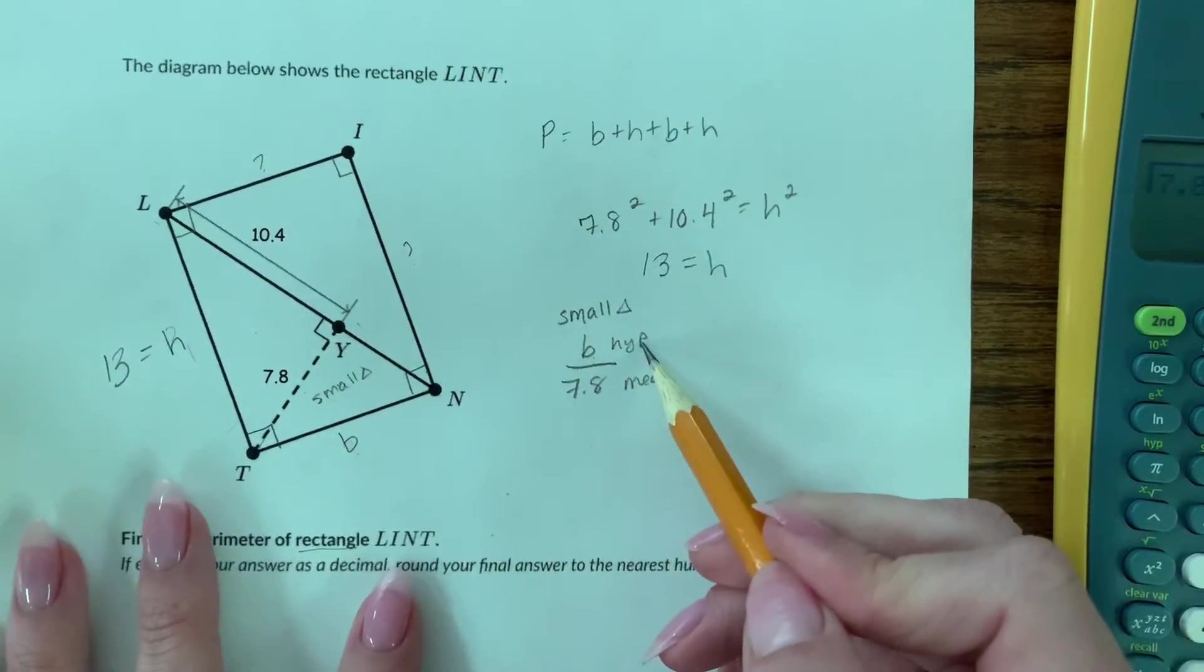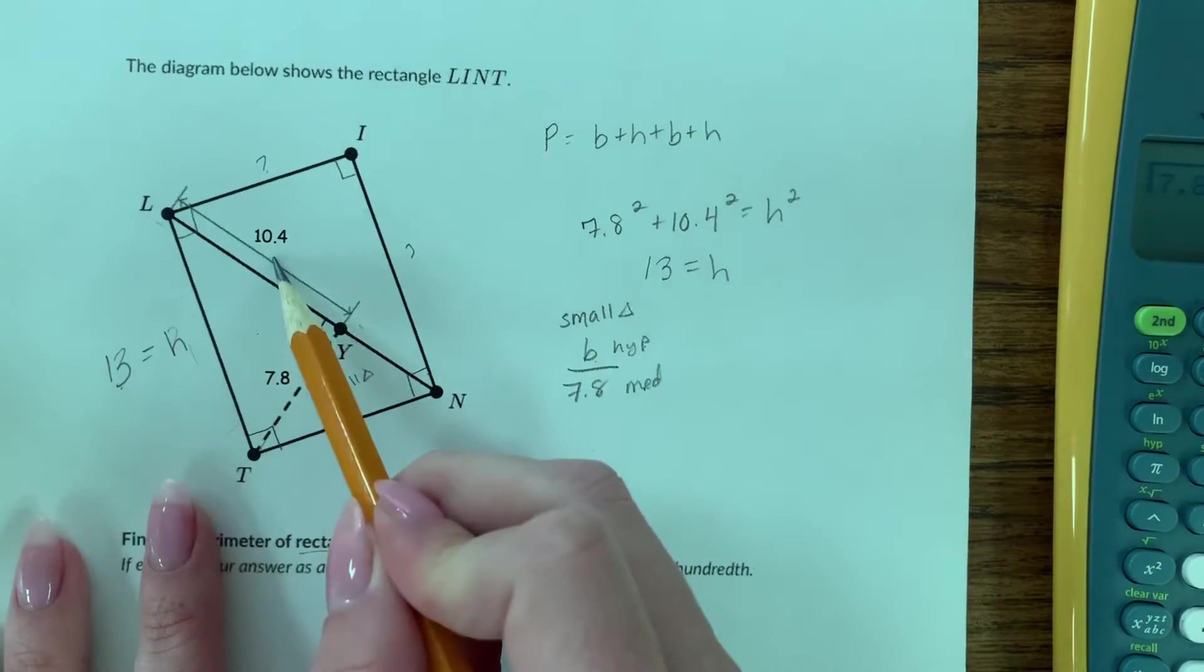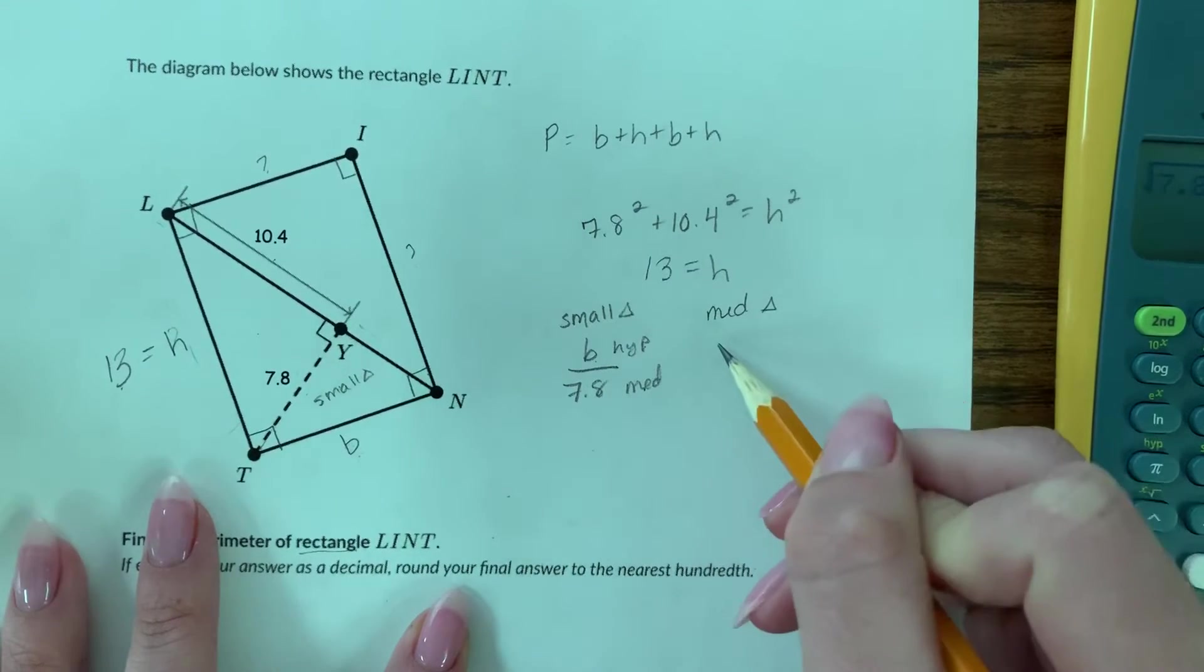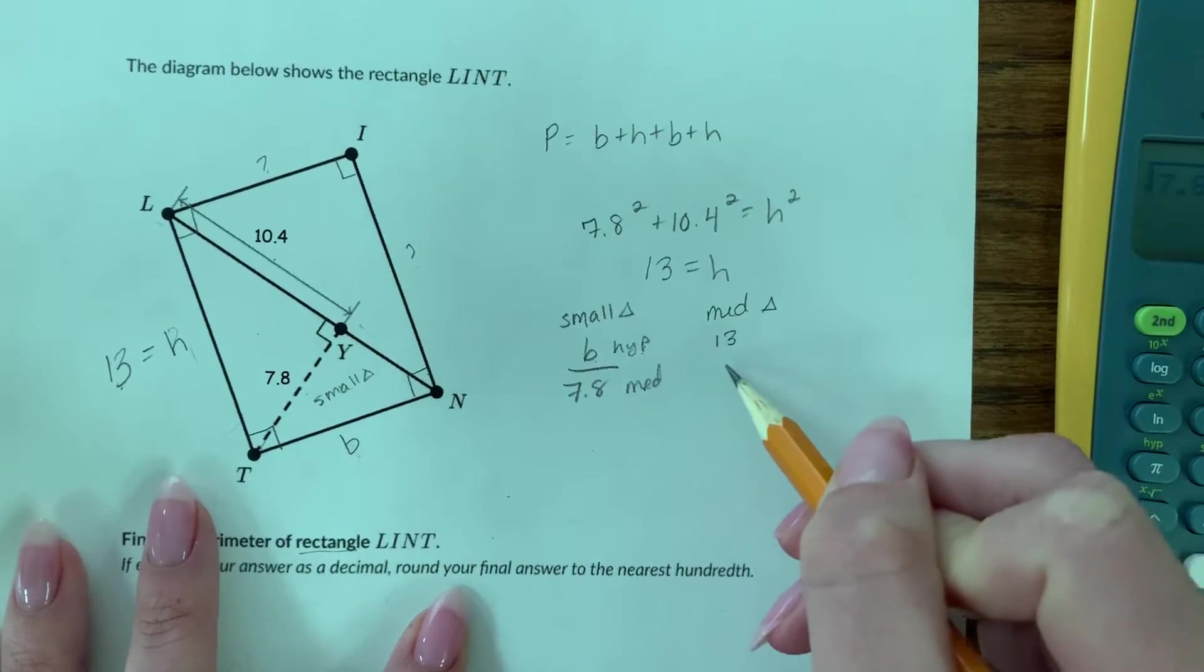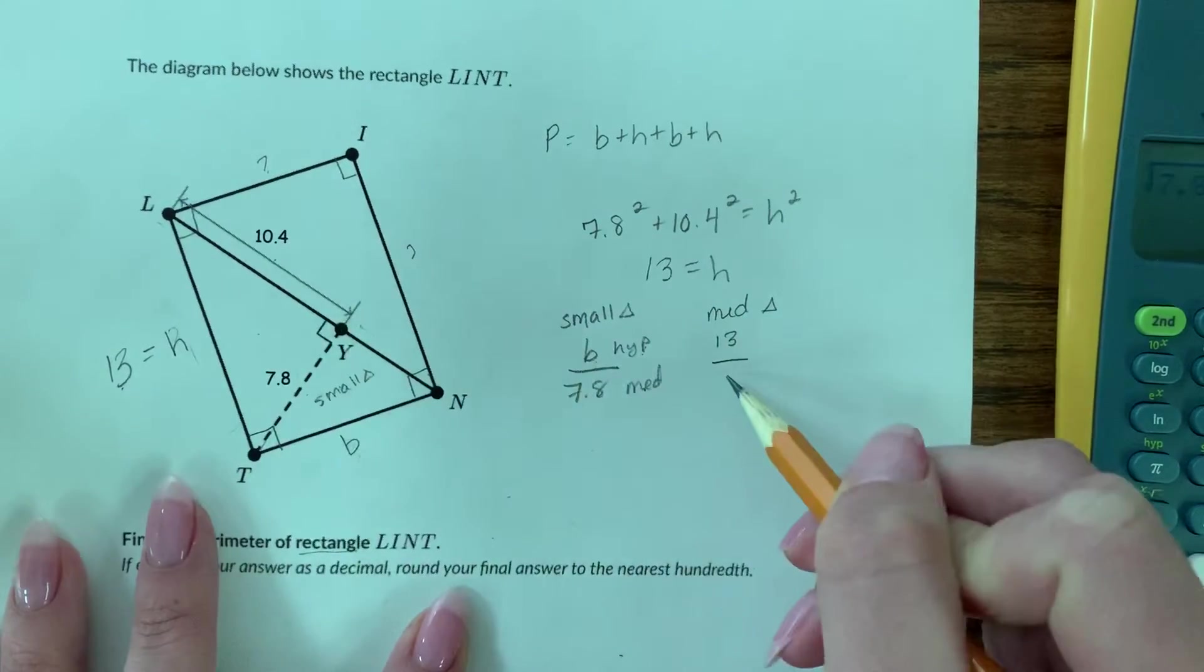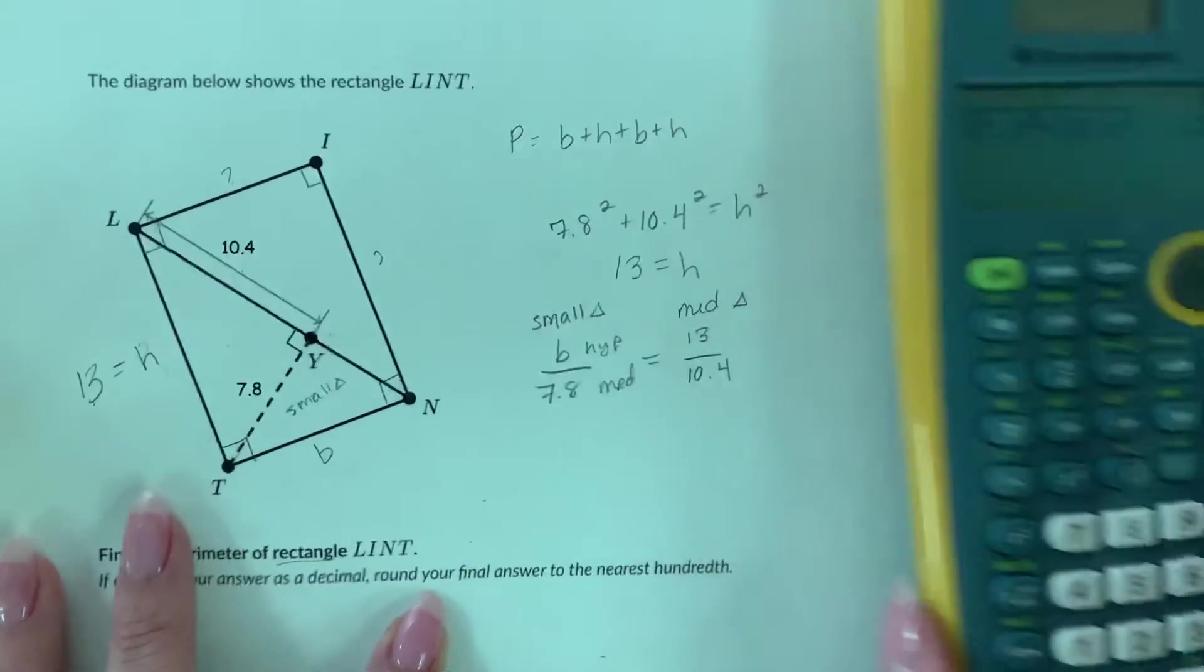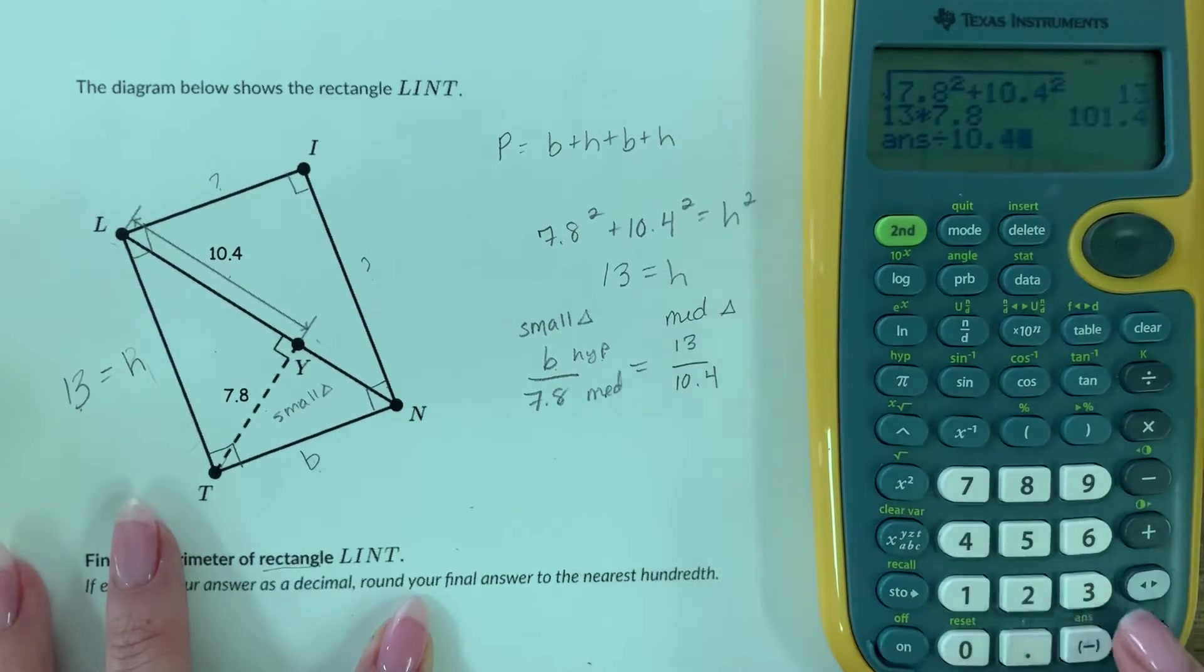I actually know the hypotenuse and the medium side of this medium triangle right here. For this medium triangle, the hypotenuse is 13 because I just figured that out, and the medium side is 10.4. If I do cross multiplication, I'll do 13 times 7.8 and then divide that by 10.4, and that'll give me 9.75 for this length right here, for the value of B.